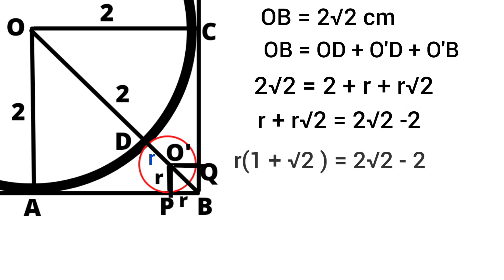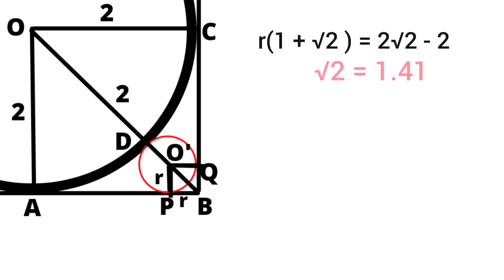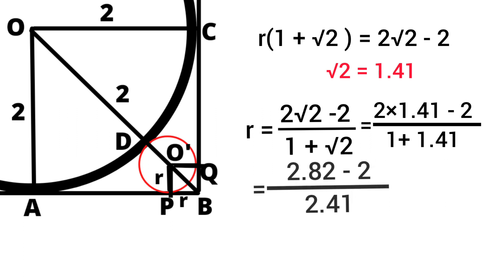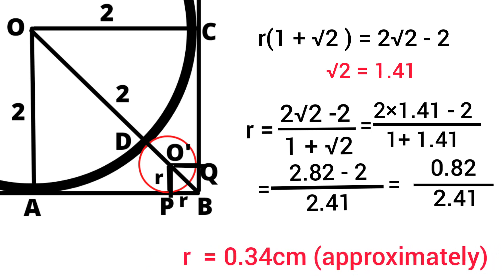Then R times (1 plus √2) equals 2√2 minus 2. Let's consider the value of √2 as 1.41. Then R equals (2×1.41 - 2) divided by (1 + 1.41), which equals (2.82 - 2) divided by 2.41, which equals 0.82 divided by 2.41. So the radius of the smaller circle is approximately 0.34 cm.